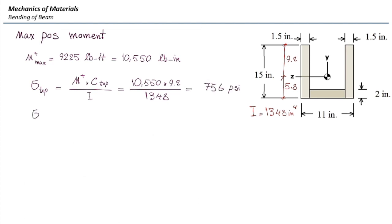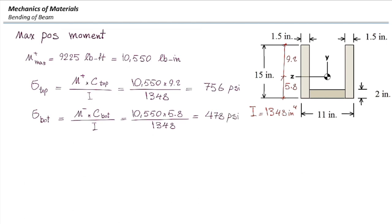Now we calculate the stress on the bottom part, which would be 478. One of these two should be negative. How do we know which one is negative? How can we remember which moment produces positive and which produces negative stress?